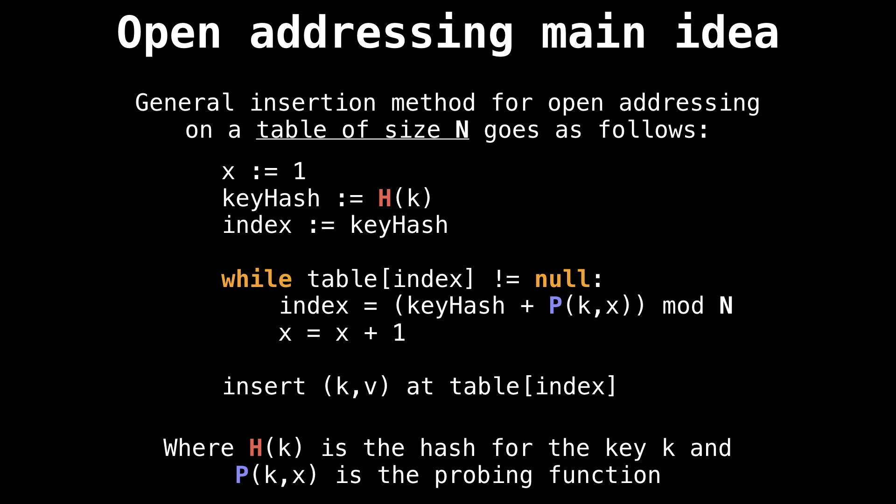To get started, let's recap how open addressing works. In general, if we have a table of size N, here's how we do open addressing, no matter what your probing function is. We start our variable x at one, the key hash is just going to be whatever our hash function gives us for our key, and our first index we're going to check is the original hash position.